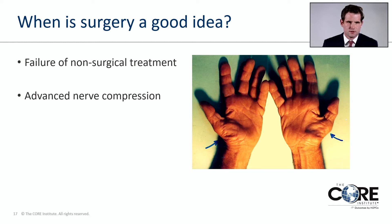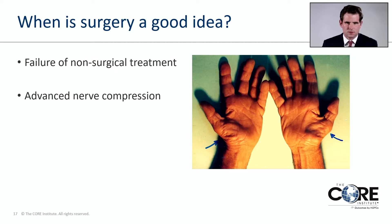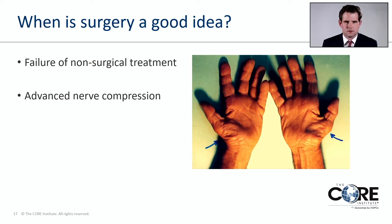When is surgery a good idea? There are really two main scenarios in my practice. The first is failure of non-surgical treatment — if we try bracing and a steroid shot and symptoms are still not controlled, surgery is the next step. The second is when a patient is showing signs of advanced nerve compression — for example, atrophy or loss of the thumb muscle. The longer this goes on, it tends to be progressive and can lead to further nerve dysfunction and more permanent weakness, so in those patients I move to surgery at a quicker pace.